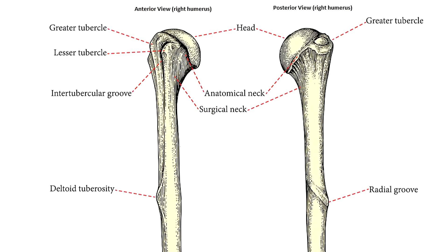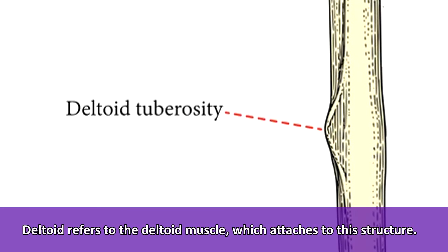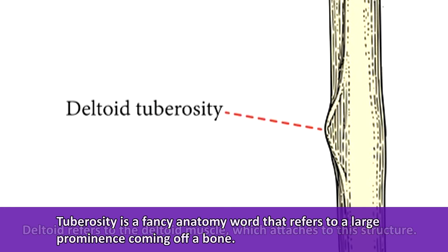Next, we have this odd triangle-shaped projection coming off the shaft of the humerus, which is called the deltoid tuberosity. Deltoid of course refers to the deltoid muscle, which is your shoulder muscle, and that attaches to this structure. Tuberosity is just a fancy anatomy word that refers to a large prominence coming off of a bone.